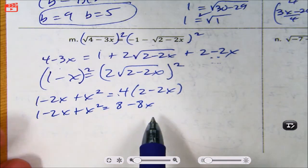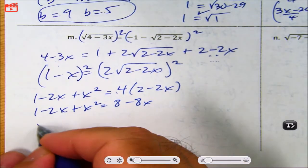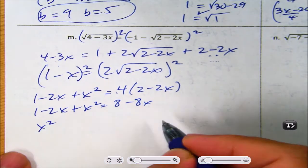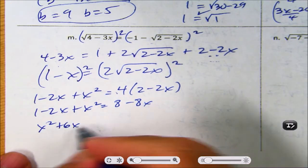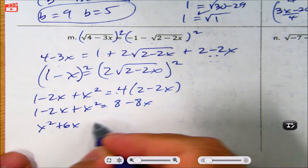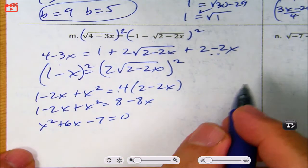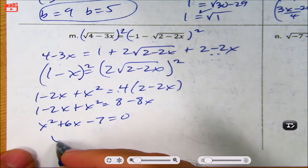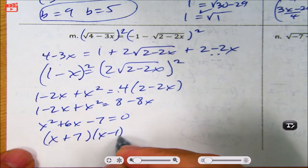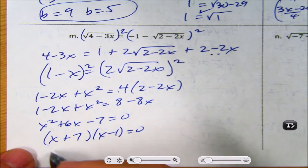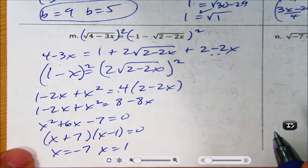Moving everything to the left: x² plus 6x minus 7 equals 0. That factors as (x plus 7)(x minus 1) equals 0, giving x equals negative 7 and x equals 1.